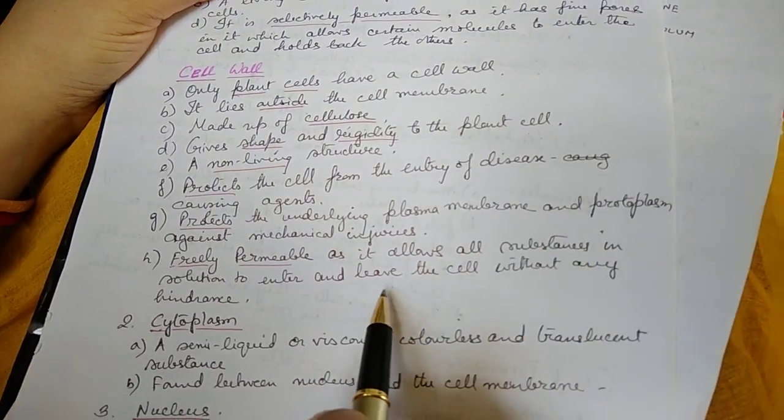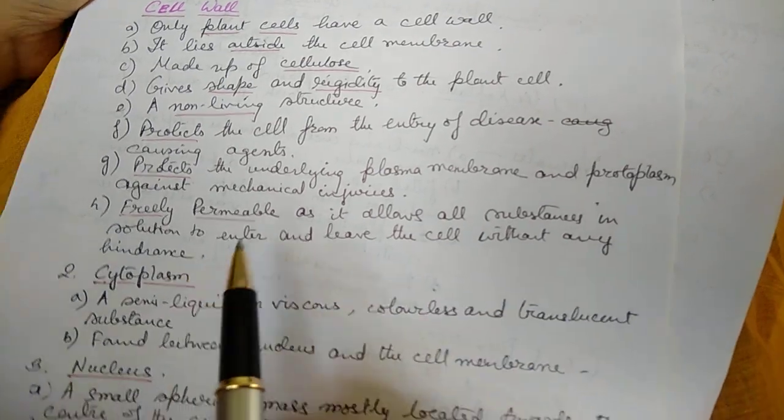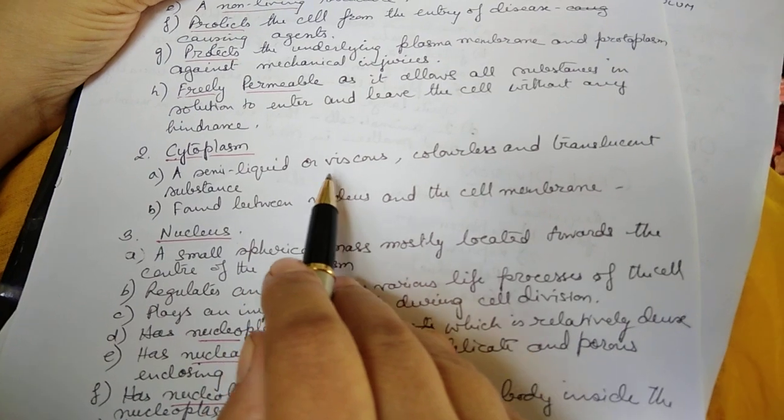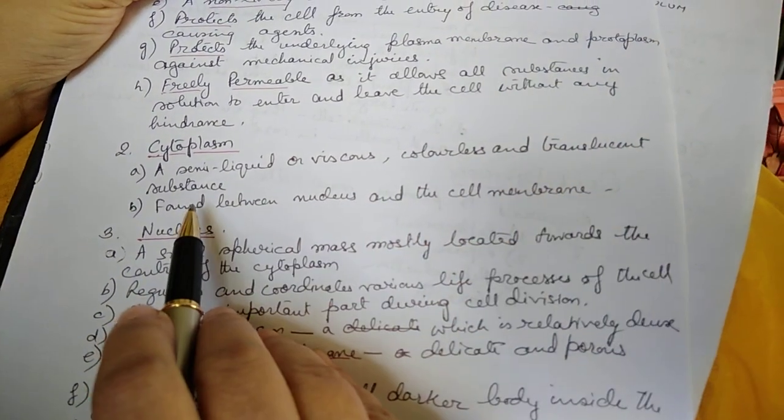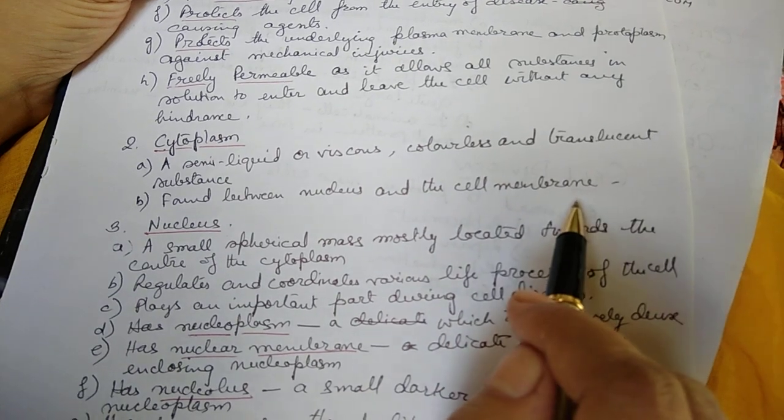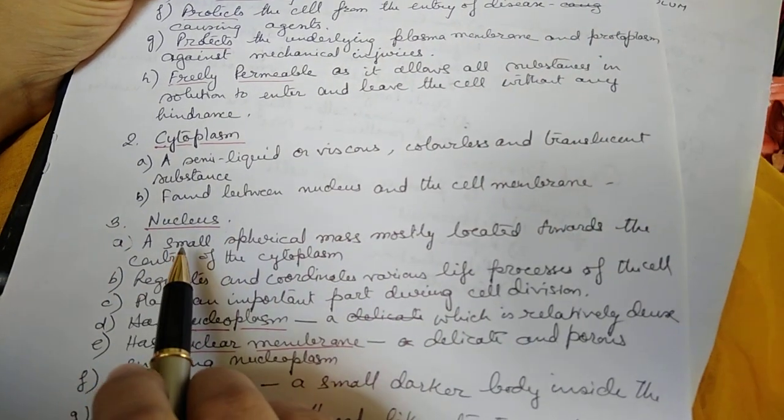Now the cytoplasm. It's a semi-liquid or viscous, colorless and translucent substance. It's found between the nucleus and the cell membrane.